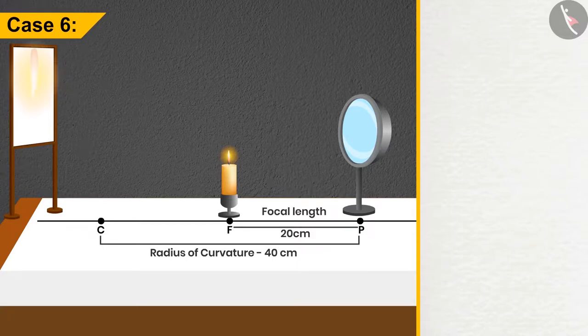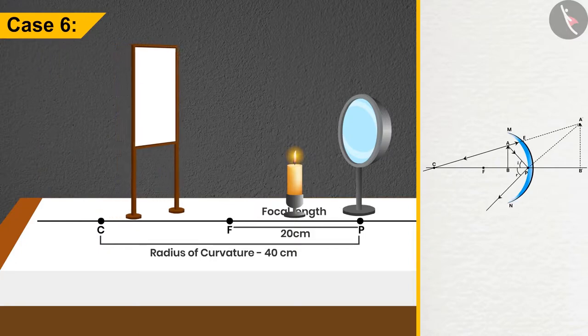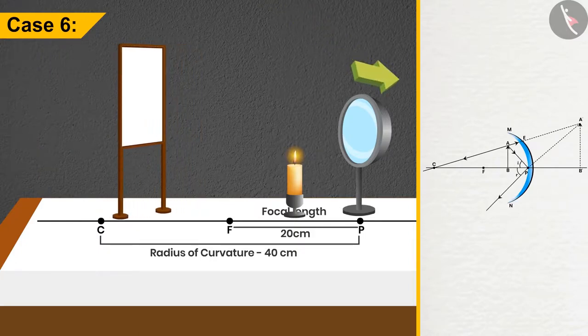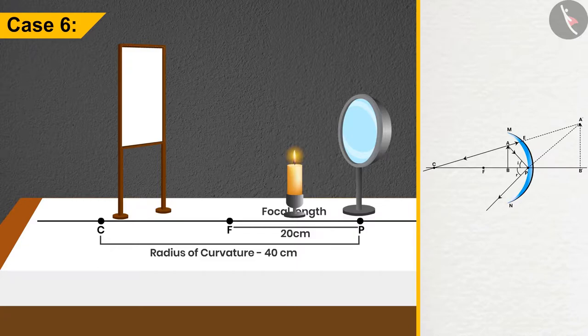Case 6: In the last case, if the candle is placed between F and P, then the image will not be formed on the screen. But it will appear to be formed behind the mirror as in the case of convex mirrors. Size will remain enlarged and nature will be virtual and erect.